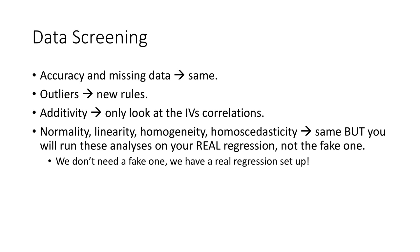When we get into data screening for regression, we're going to add some new rules. We check for accuracy and missing data in much the same way. For additivity, make sure you're looking at the correlation between IVs only — the correlation between IV and DV is kind of the point, so don't confuse yourself there. We want to make sure IVs aren't going to suppress each other, so we bump the correlation cutoff down to 0.7 to avoid suppression effects. We also want normality, linearity, homogeneity, and homoscedasticity — but now we're using real regression instead of a fake ANOVA workaround.